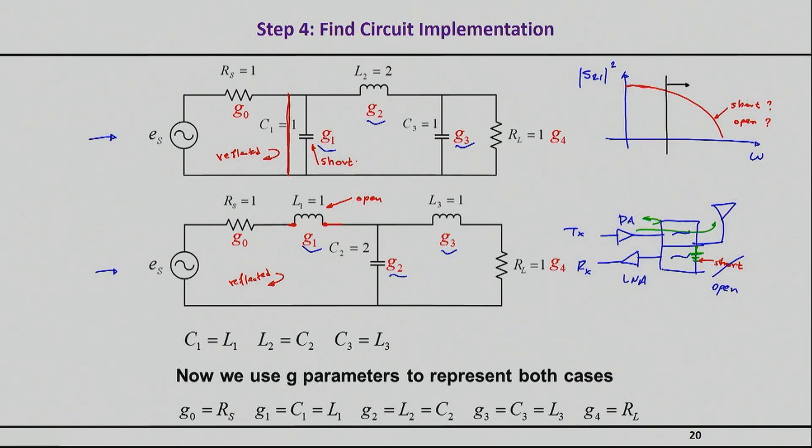What you really want is not a short, but an open. So, rather, when the signal comes through, it sees two paths. One has been left open, so it won't go to the receiver path. The other is basically leading to the antenna, and you basically have success.